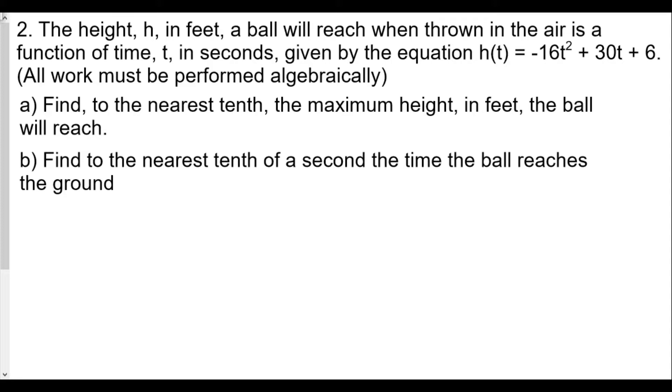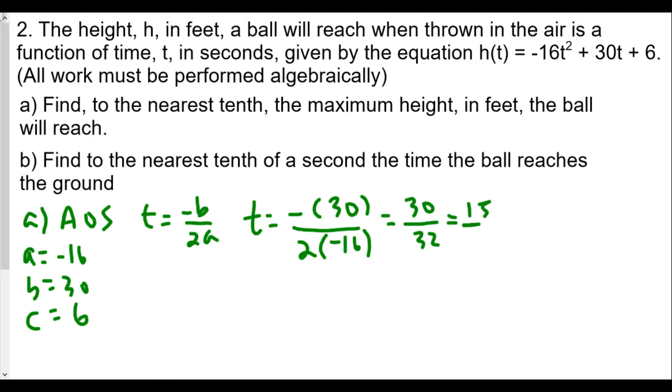The first thing we're looking for is to find, to the nearest tenth, the maximum height in feet the ball will reach. To find the maximum height, we're going to use our axis of symmetry. For a, our axis of symmetry would be t = -b/2a. We see in the quadratic equation a = -16, b = 30, and c = 6. We plug into our formula: t = -(-30)/(2×-16), which gives us 30/32, which simplifies to 15/16.